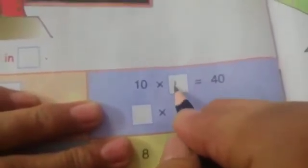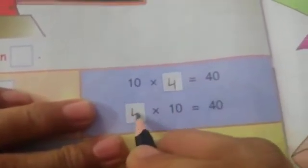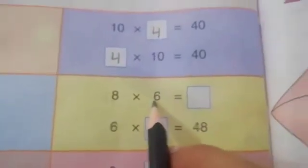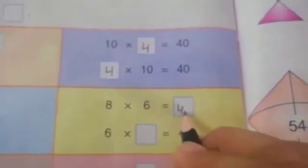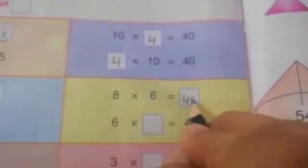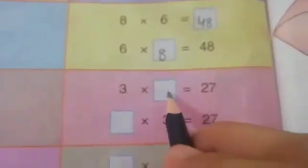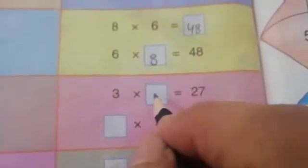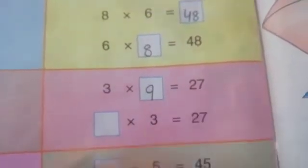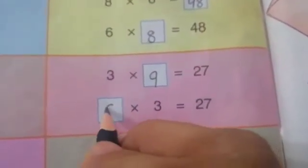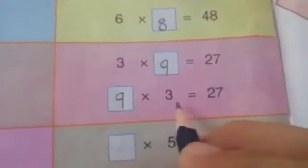10 4s are 40 — and 4 10s are 40. 8 6s are 48. Now change the order — 6 8s are 48. 3 multiply by 7 — 9. Okay and 9 multiply by 3 is equal to 27.